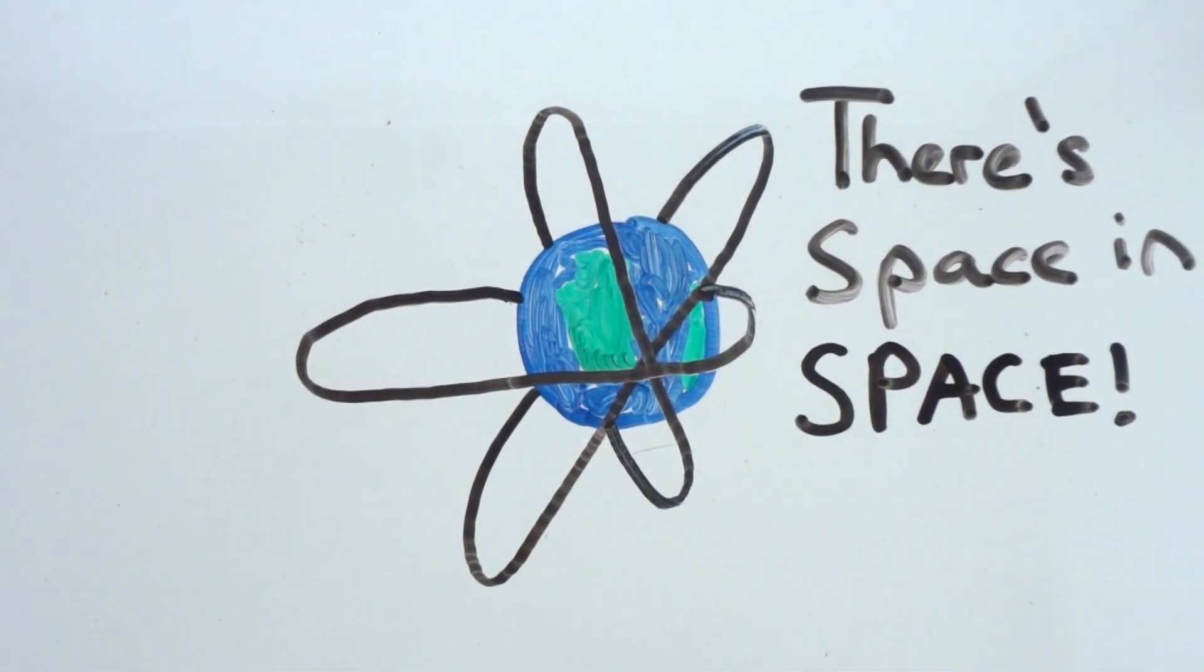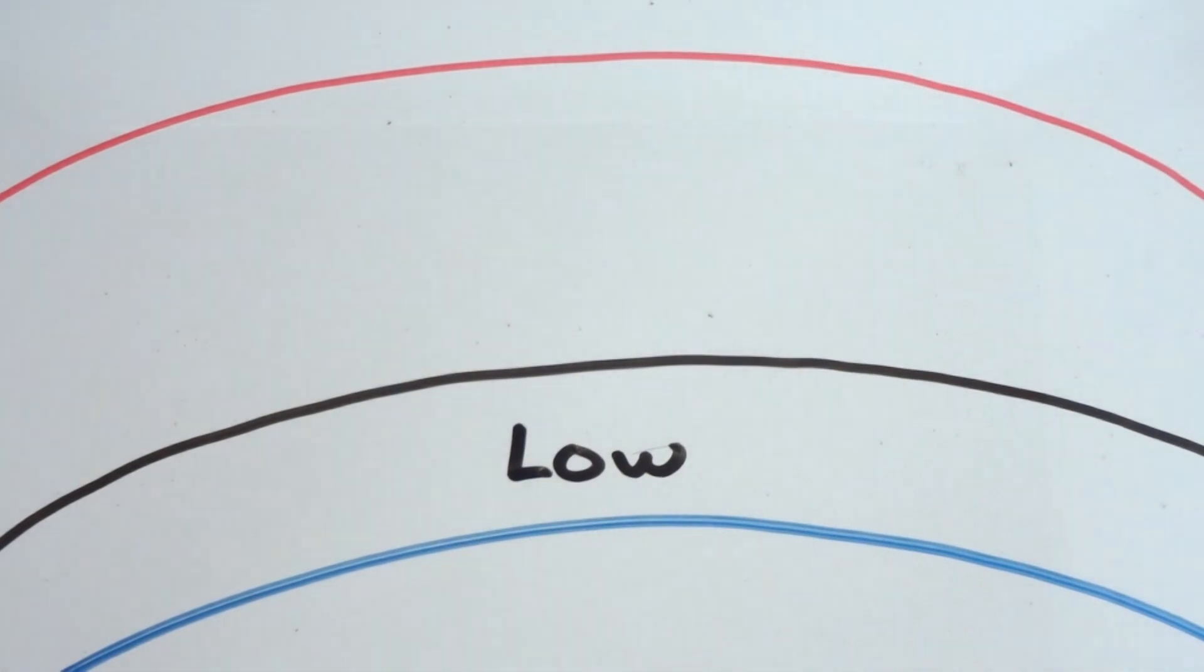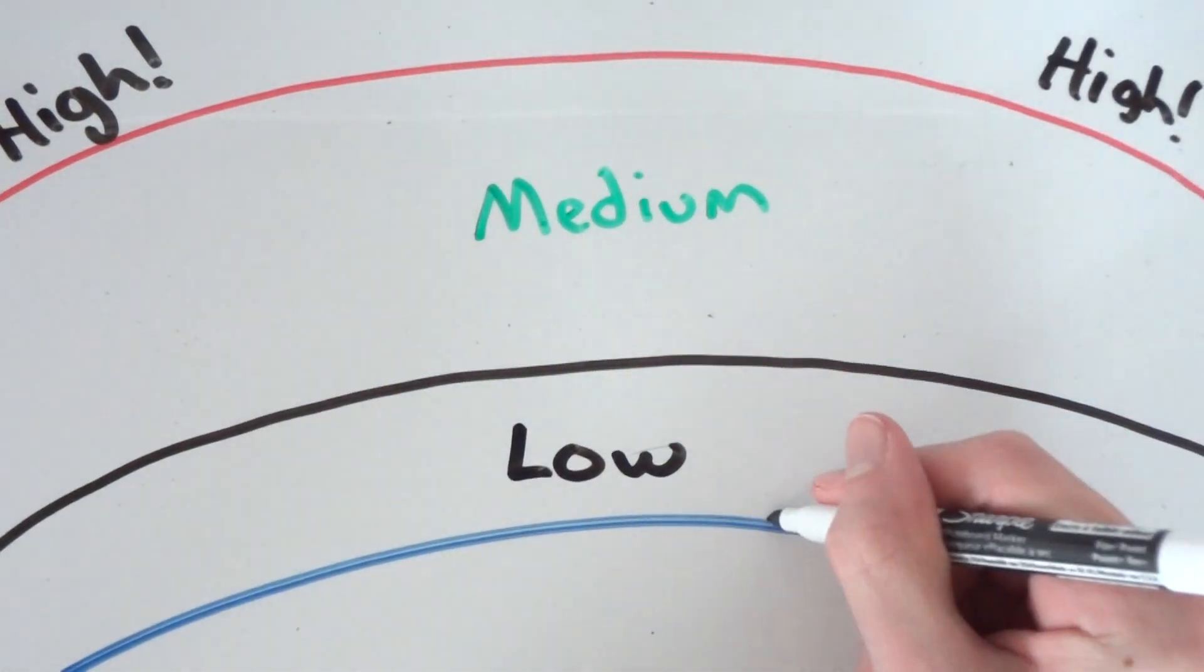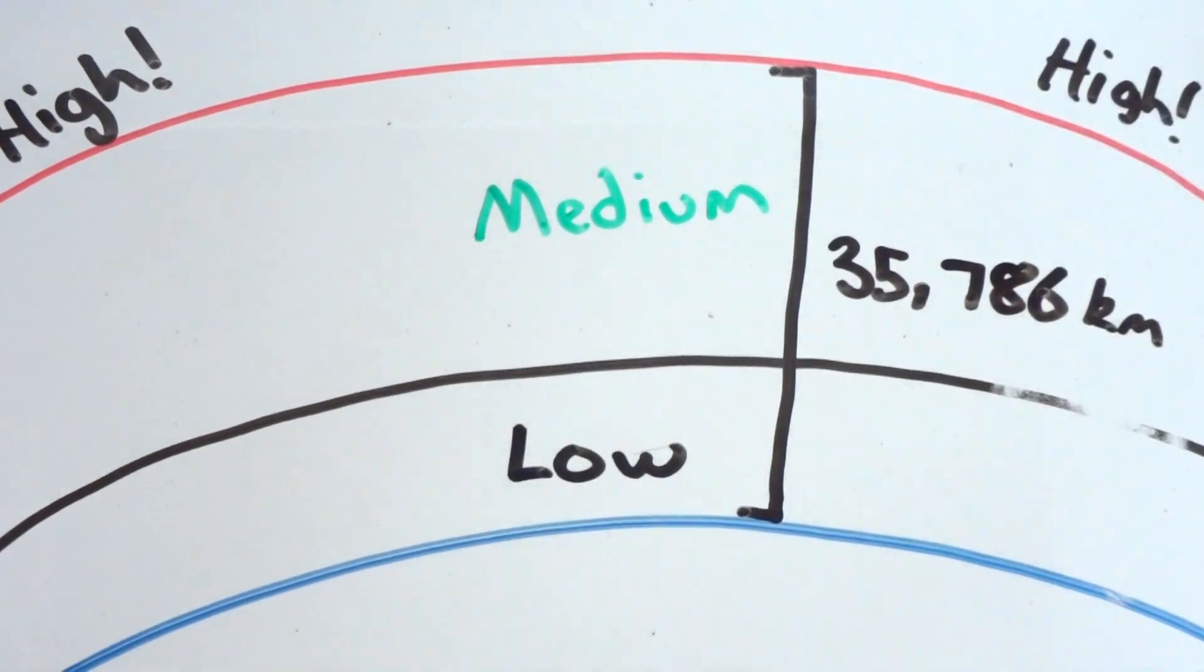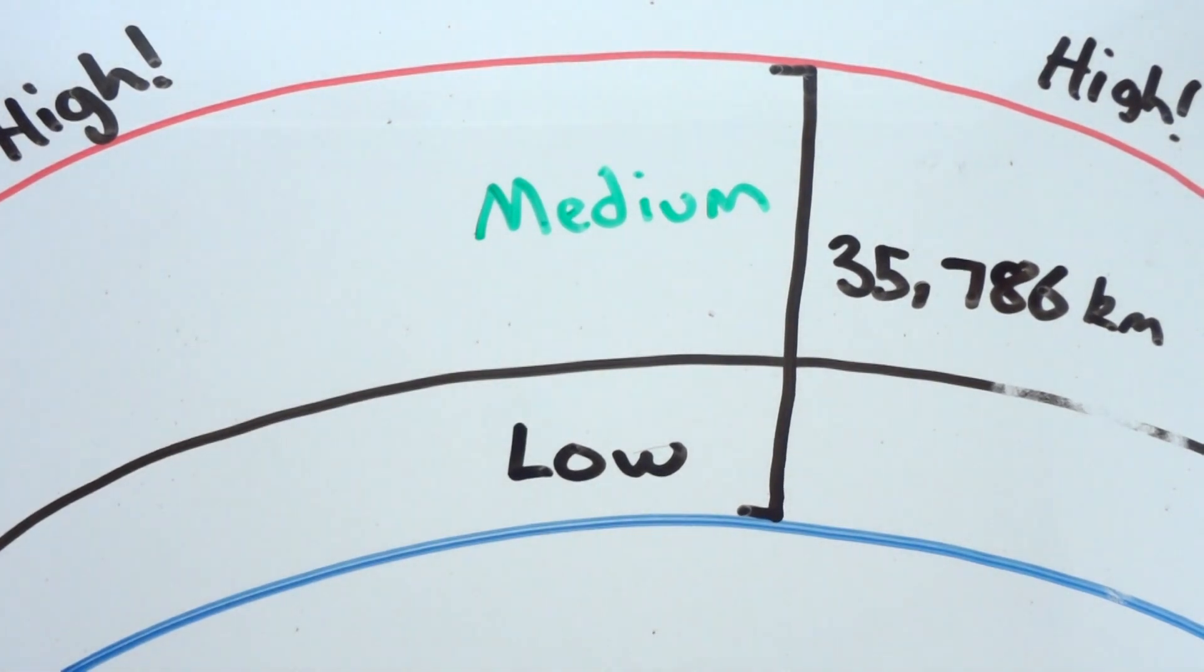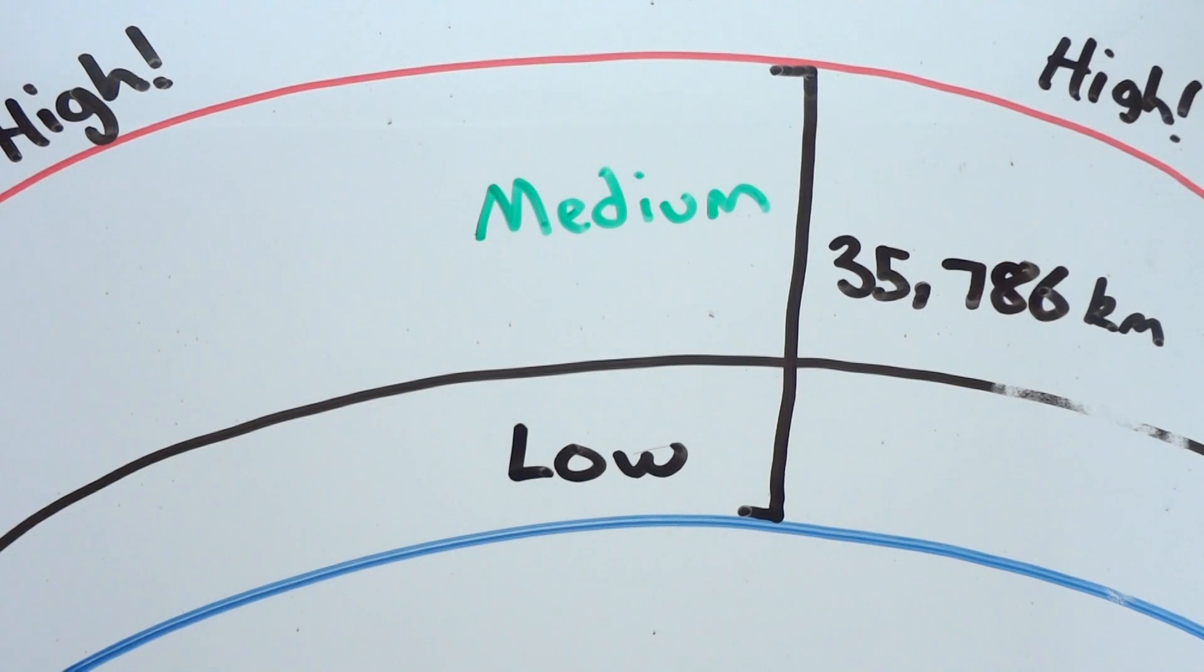Orbit altitude is split into three zones: low Earth orbit, medium Earth orbit, and high Earth orbit. There are 35,786 km between sea level and where the high Earth orbit begins, which means there's a lot of space for satellites to orbit between. Obviously orbiting at sea level isn't very practical.